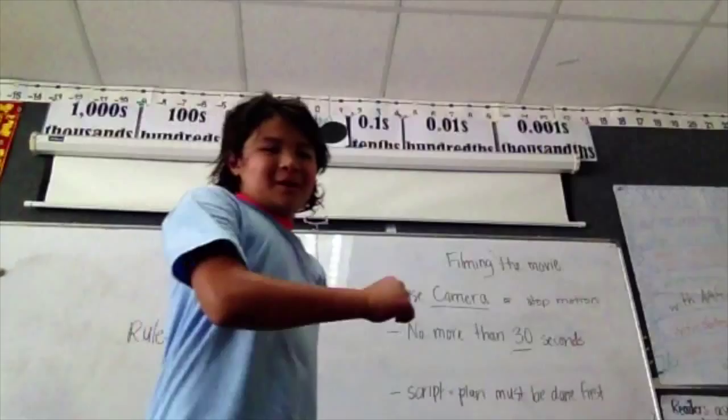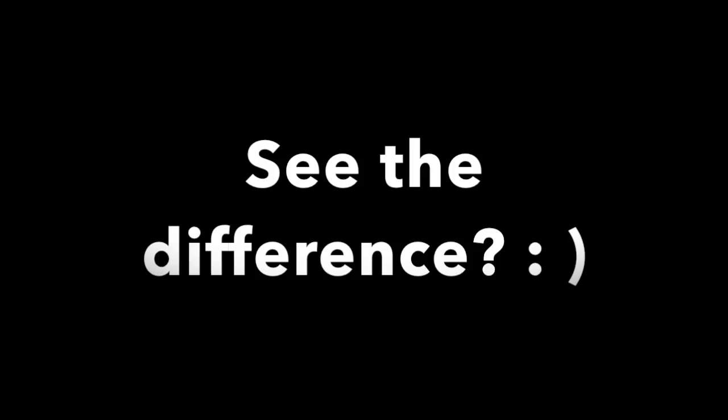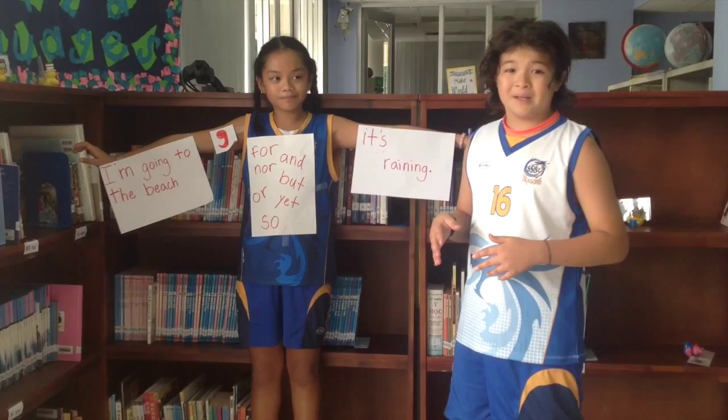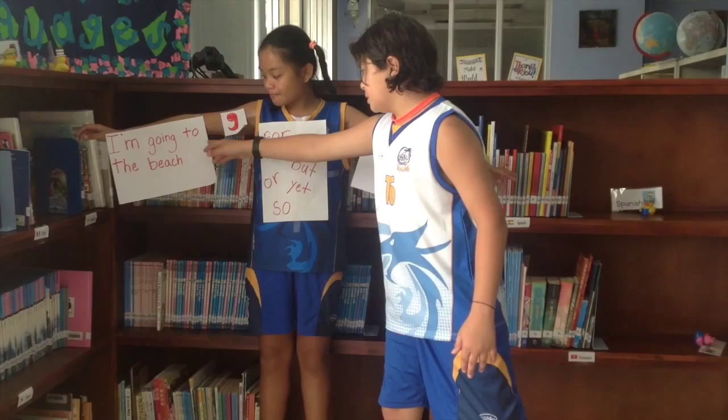I'm going to go swimming. But I forgot my swimsuit. Commas are very useful for combining two sentences. For example, put your first simple sentence, then a comma, then use one of the connecting words, and then your other sentence. For example: I'm going to the beach, but it's raining.